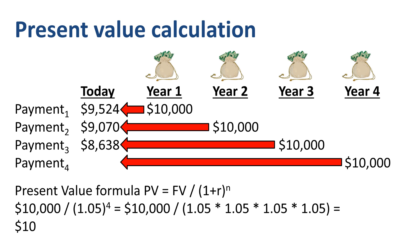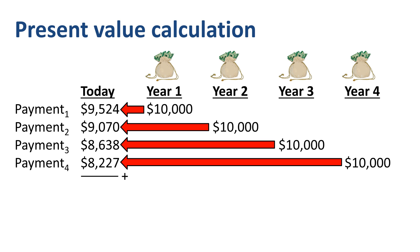The present value of each line item keeps decreasing as we add more years to discount. If we add up the present values of those four payments, we find that the present value of this annuity is $35,460.